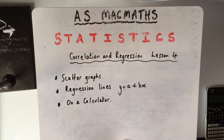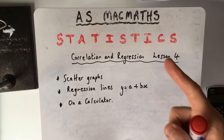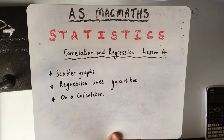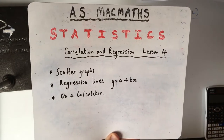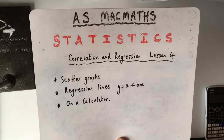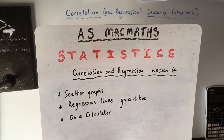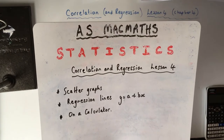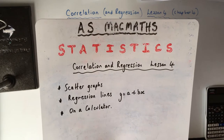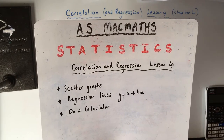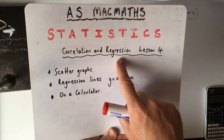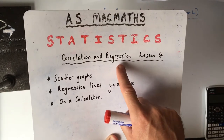Let's do some maths today. Statistics. So this is chapter four — let's call it lesson four because it's in chapter four — and it's about scatter graphs. We're looking at correlation, that's the name of the chapter, but we're also going to really be looking at regression.